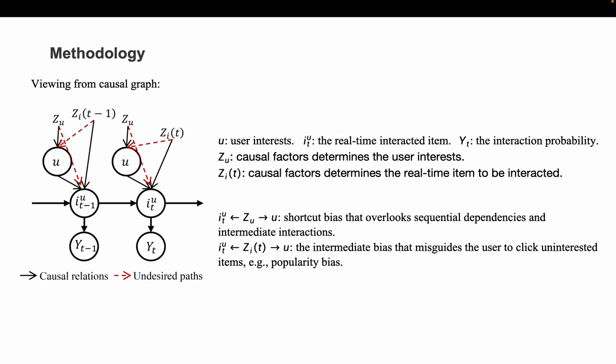From the graph, we can find there exist two biased paths. The path where Z_U causally affects the user interest and real-time item interaction may induce spurious associations, which can be considered as shortcut bias that overemphasizes local item bias and overlooks sequential dependencies.